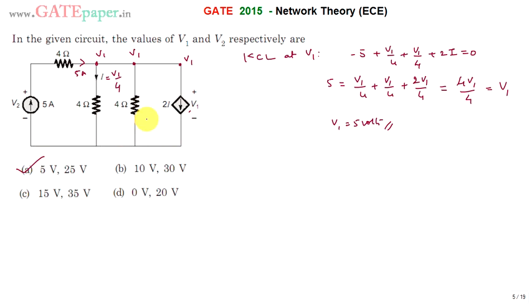But we will see V2 value also. To know that one it doesn't require for this question because you can directly point out only 5 volts is given only for option A. Next, i can be written as V1 by 4 which is 5 by 4 amperes.